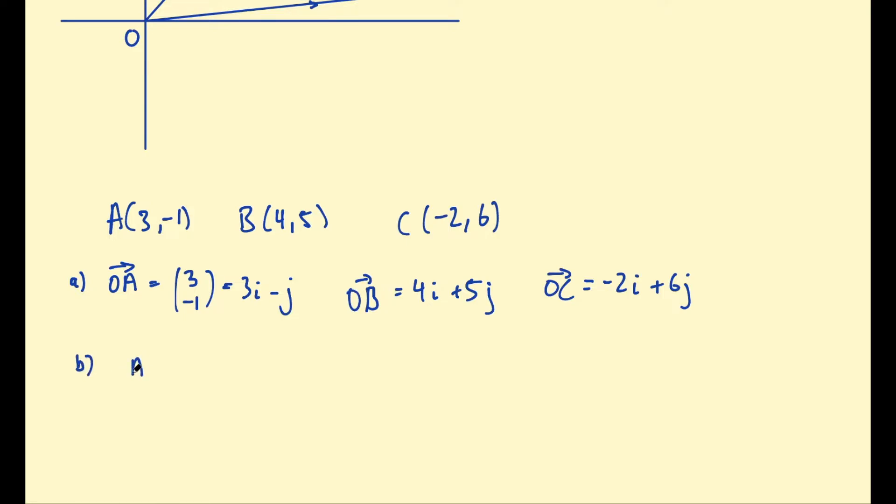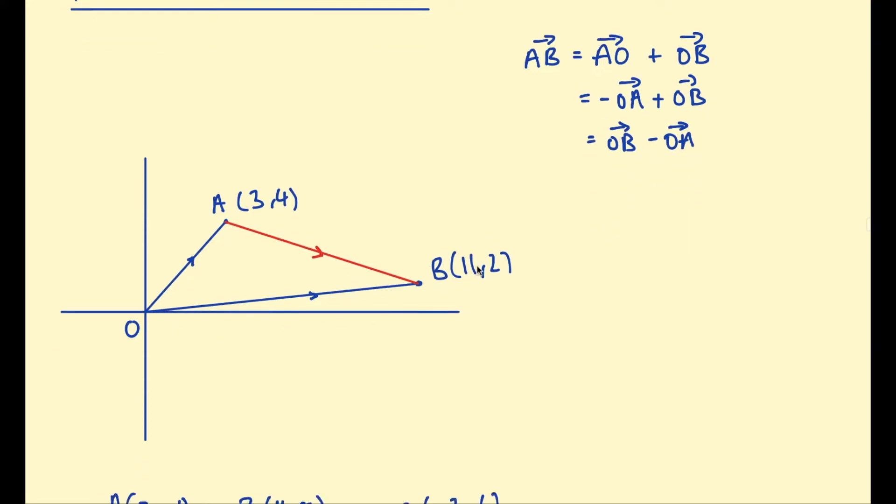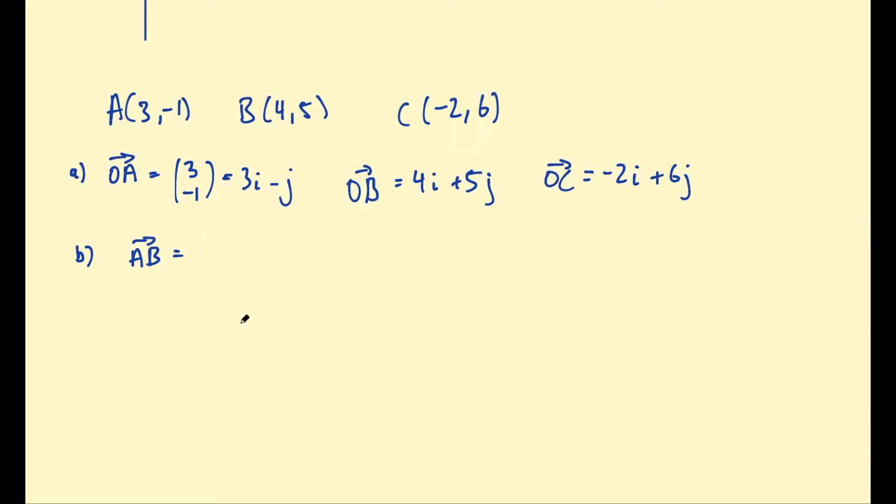And now we want to find, for example, AB using that formula we just talked about. So the order is important. If you notice, the end of this vector is B, so we're doing OB take OA. If we went the other way, BA, it would be OA take OB. I kind of think of that as the end point subtract the starting point. So now we just use the vectors we found. That's 4i + 5j subtract (3i - j). And then we're just doing 4 take 3 which is i, and 5 plus 1 which is plus 6j.